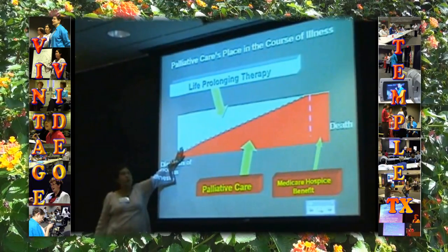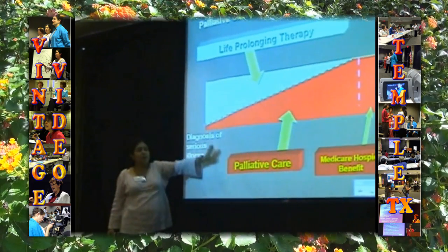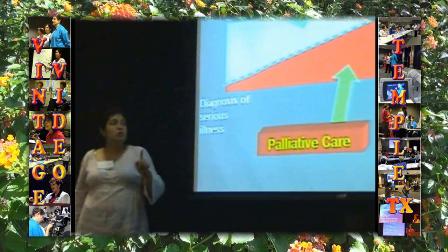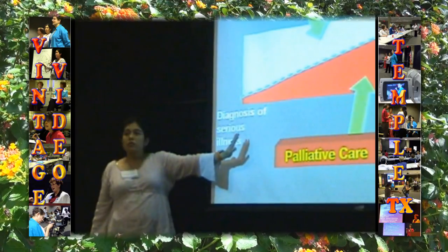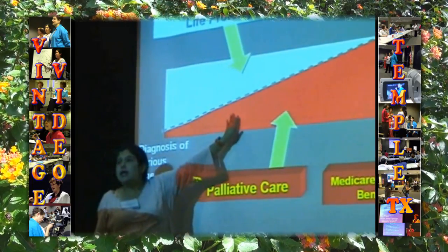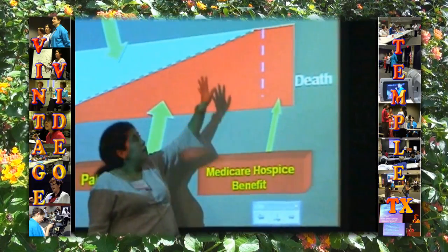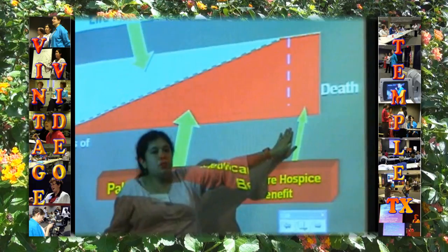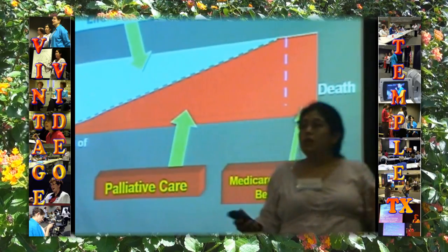Mr. Jones is diagnosed with lung cancer and decides to go on curative therapy with surgery and adjuvant chemotherapy, but at the same time a palliative care consultation is called. Mr. Jones is not terminally ill at that point — he's having symptoms, and that's why the consult was called. He gets curative therapy and chemotherapy while simultaneously receiving palliative care services and an interdisciplinary team approach. As his options for cure become fewer, palliative care becomes more prominent, until the hospice Medicare benefit is provided and Mr. Jones passes away.